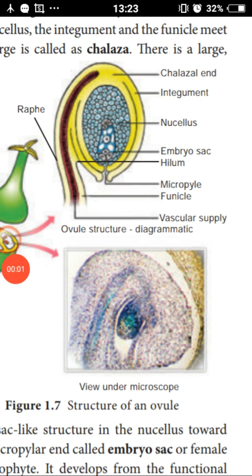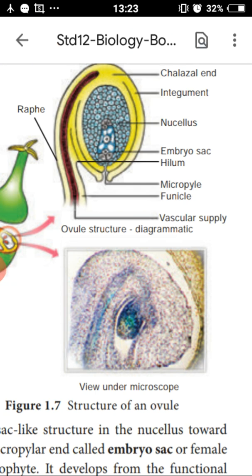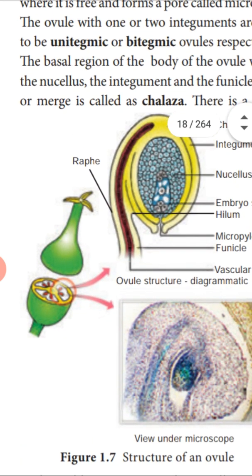Dear students, last class we have seen the development of male gametophyte — how the pollen grains are formed from the pollen mother cell. This class we are going to see about the female reproductive part, the Gynesium. Gynesium is the female reproductive part of the flower.